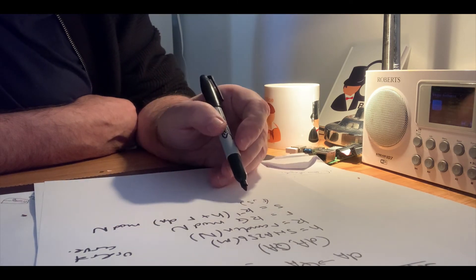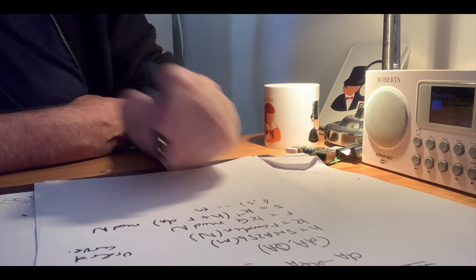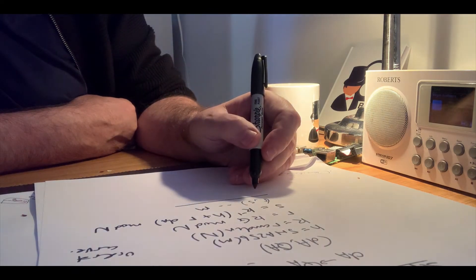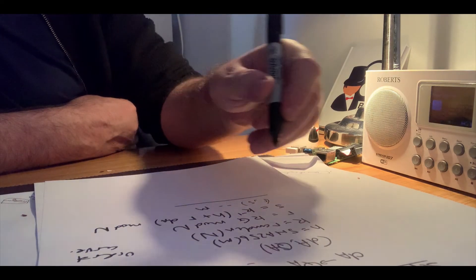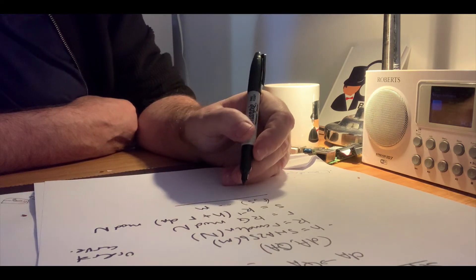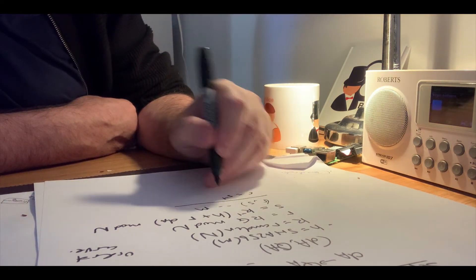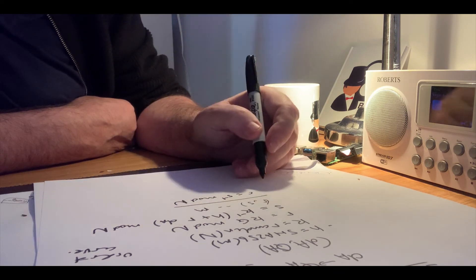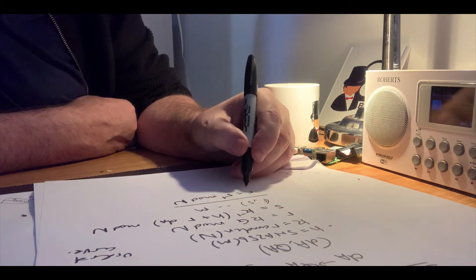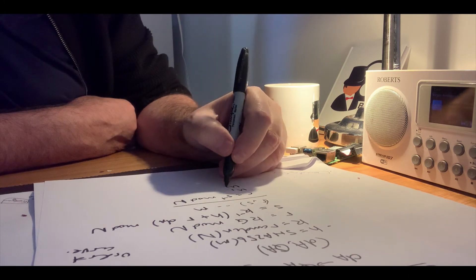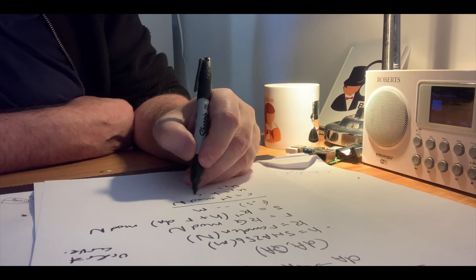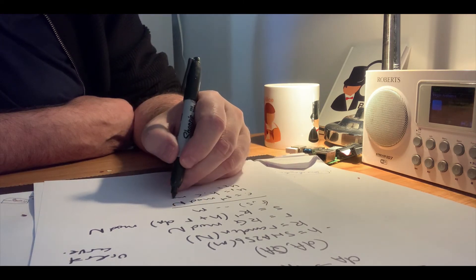So she'll send that signature along with the message, and then when Bob receives, he will also calculate the hash again of the message and calculate the inverse of s, h times c mod n. After this, he'll calculate two values, h times c mod n.